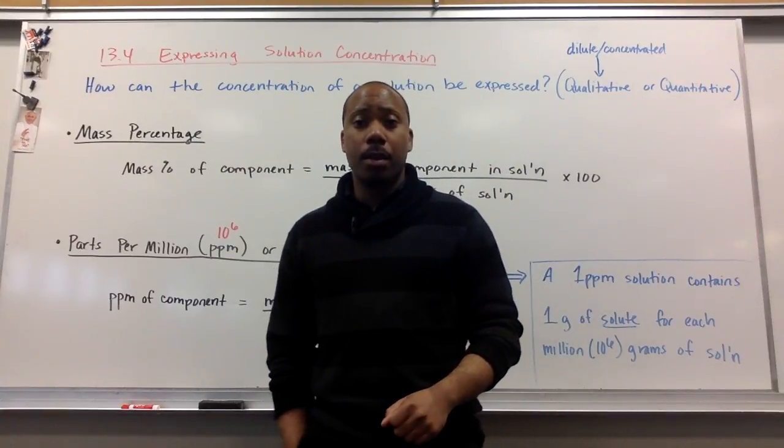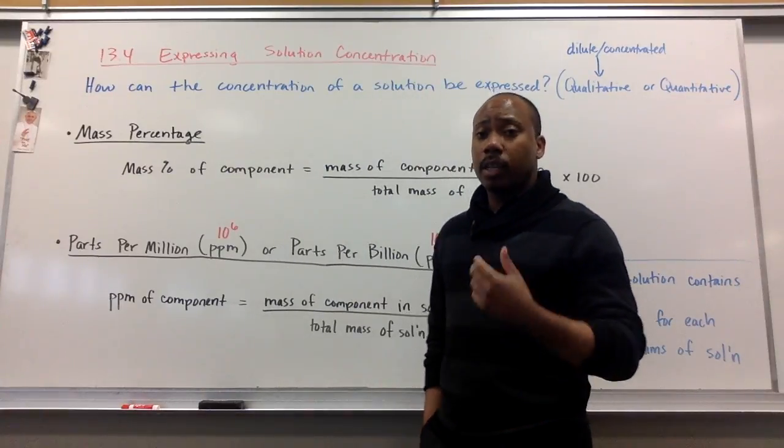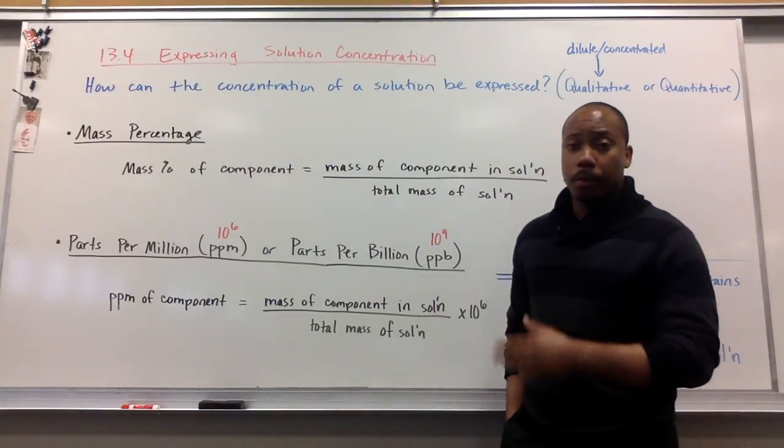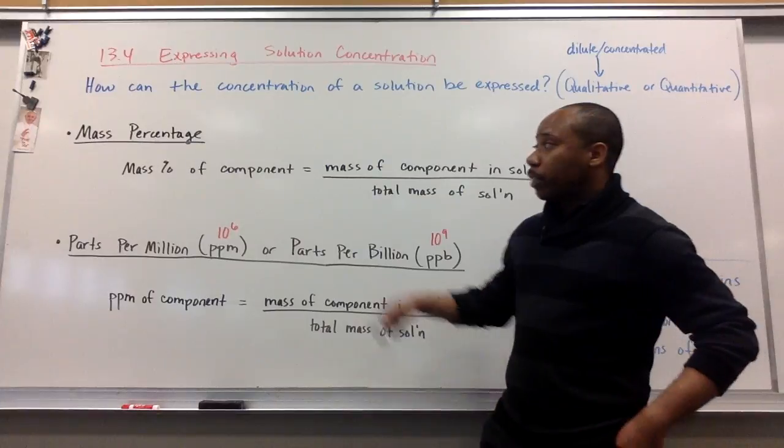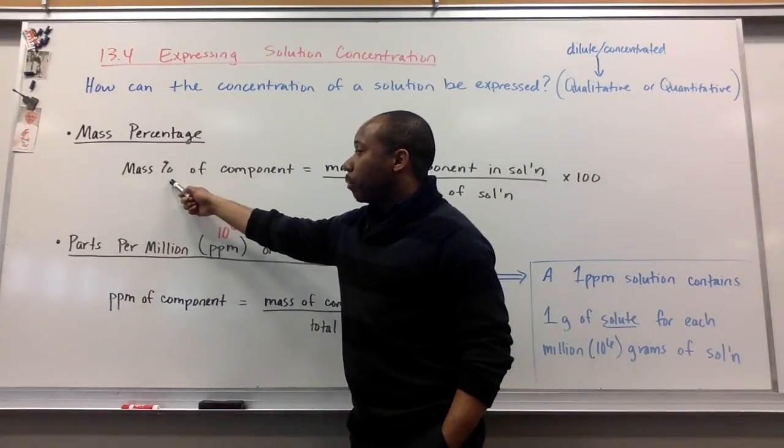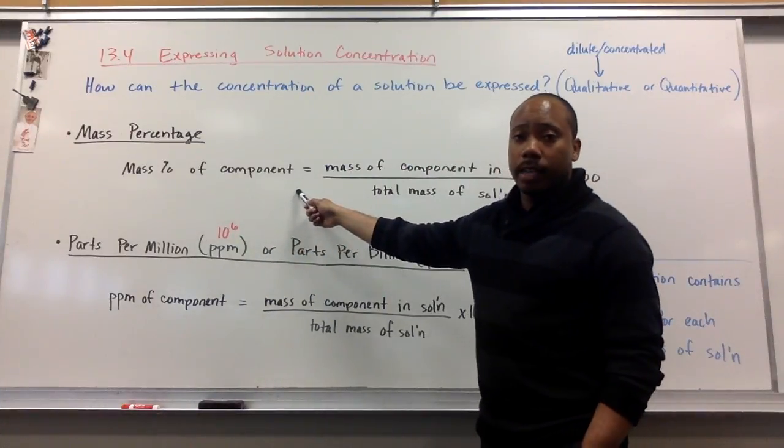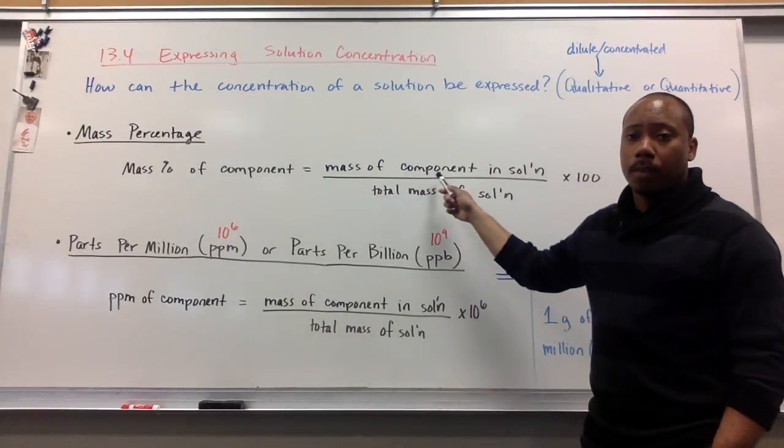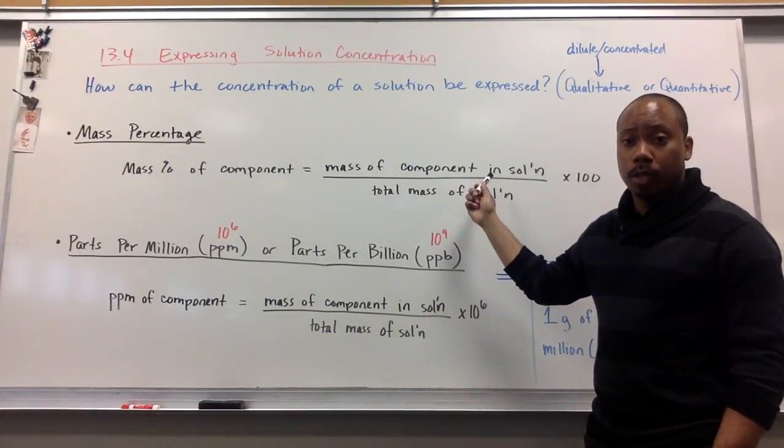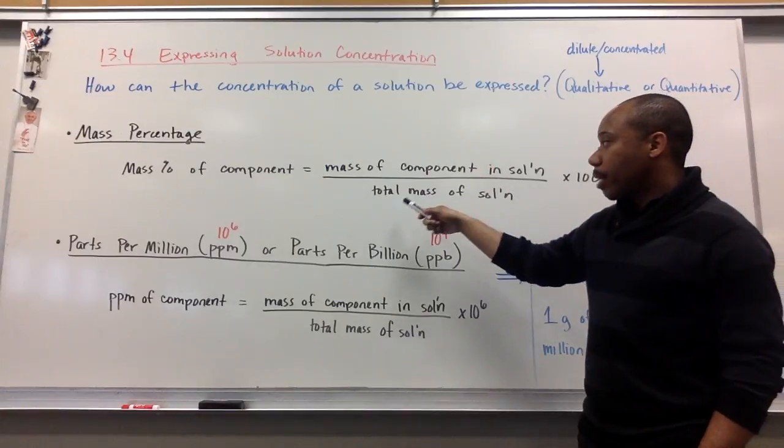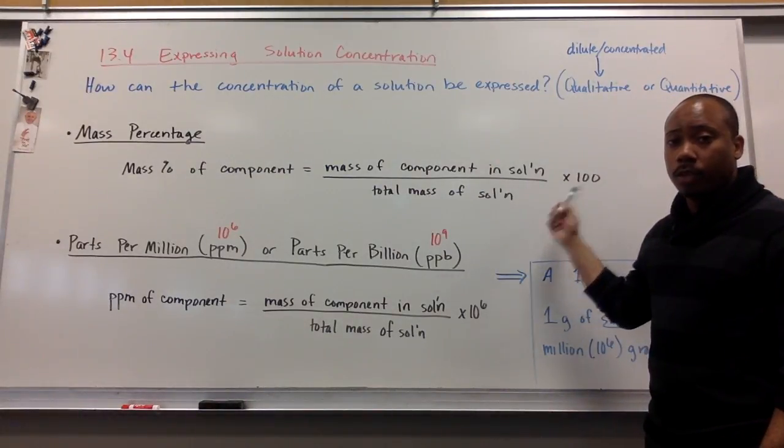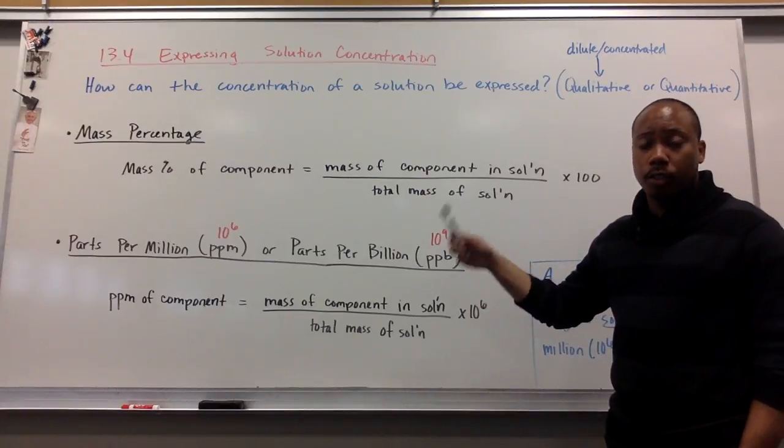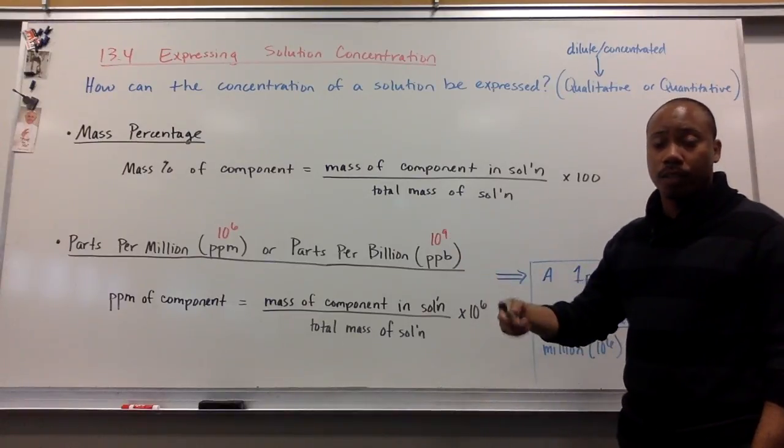The first way we can do it is using mass percentage. This is very similar to percent composition that we studied earlier in the year. Mass percentage is the mass percent of a component calculated by taking the mass of a component in solution, dividing it by the total mass of the solution, and multiplying times 100. You can find the mass percent of a certain solute or solvent in solution.